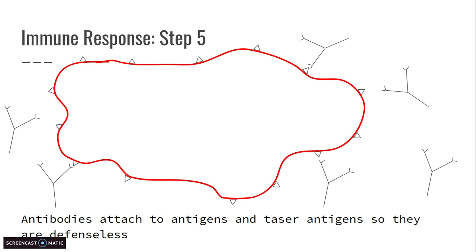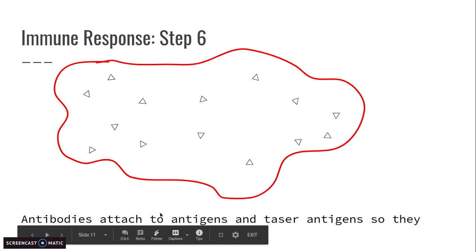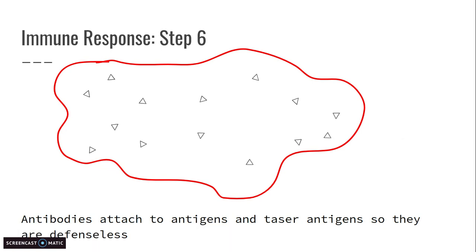In step five, the antibodies made by the B cell go back to the macrophage, attach themselves to the antigen on the outside of the macrophage, and essentially taser the antigen so that they're defenseless — they pretty much destroy the antigens on the surface of the macrophage. In step six, the antigens are now rendered safe to eat and the macrophage engulfs them. Essentially: the antigens are neutralized and we can now take them into the white blood cell.